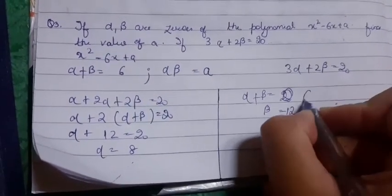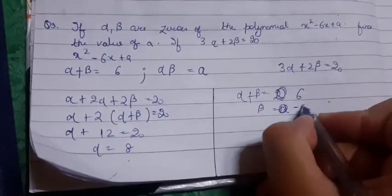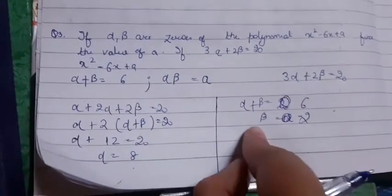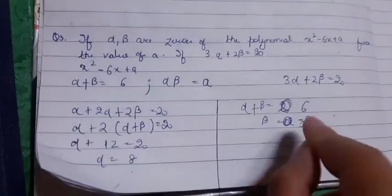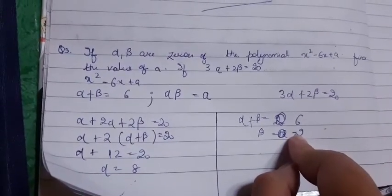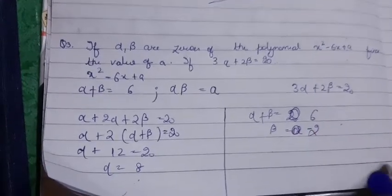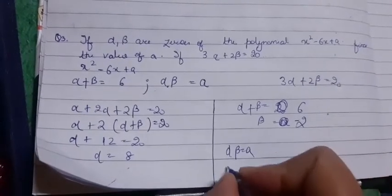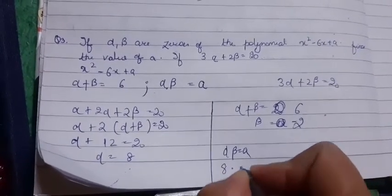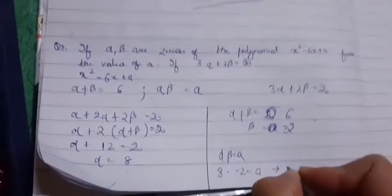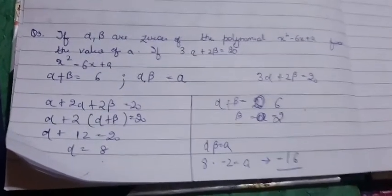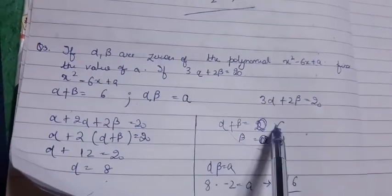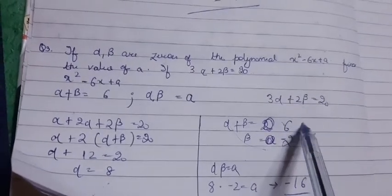If α = 8, then from α + β = 6, we get β = -2. Now α·β = a, so a = 8 × (-2) = -16. Okay, there was a mistake earlier - α + β is 6, not 20. So ignore that. Next question.